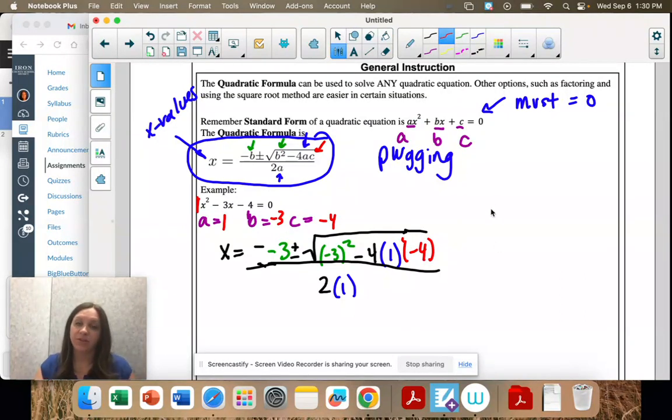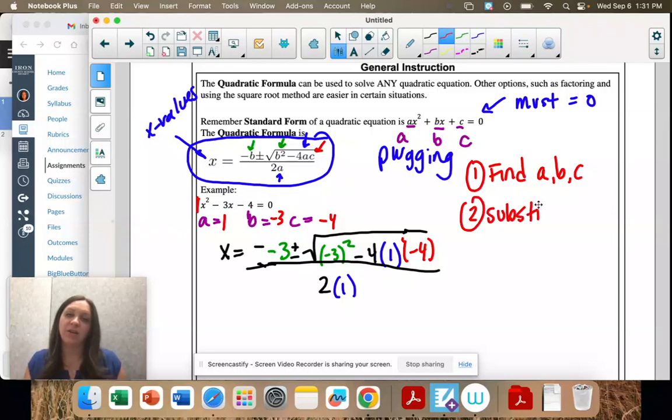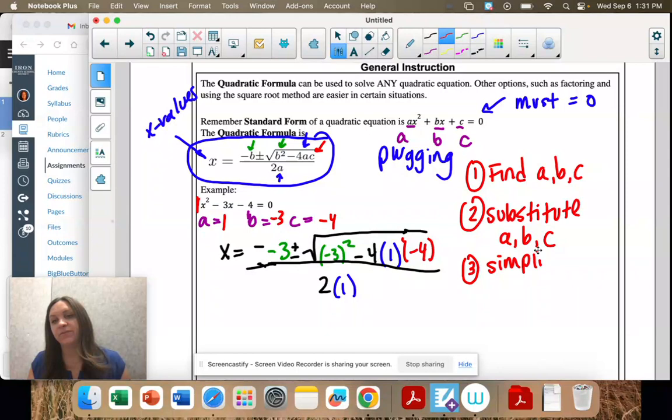So first step is find a, b, and c. Second step is substitute those values in to the formula. Third step is simplify the square root part first.